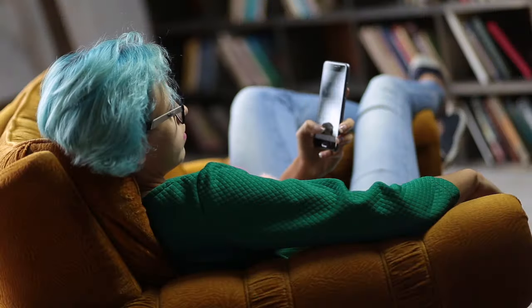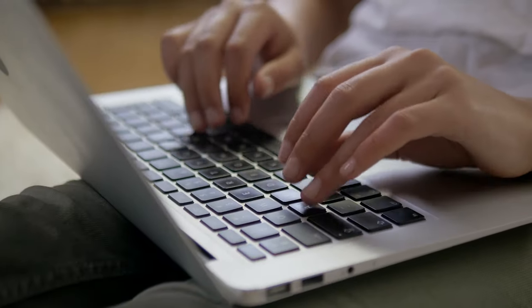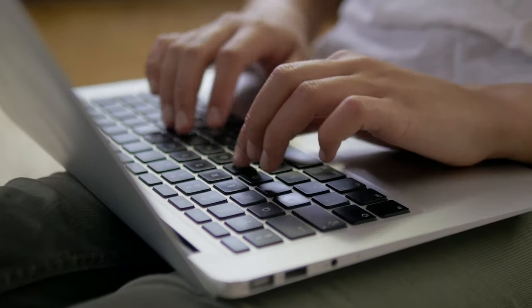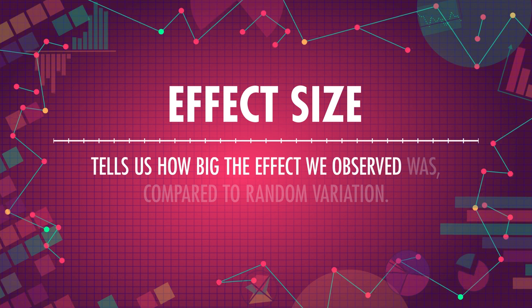Sometimes statistical significance doesn't give us the whole picture. You probably already use this kind of reasoning in your real life — like when you're scrolling through Instagram and see a former Bachelor contestant promoting a hair vitamin. A little googling tells you that yes, this vitamin does cause a statistically significant increase in hair growth, but only a few nanometers. Your hair normally grows about 12.7 millimeters a month, plus or minus a millimeter. So this vitamin has what we call a small effect size. Effect size tells us how big the effect we observed was compared to random variation. It's really important to pair our p-values with effect sizes, because sometimes we can get statistically significant effects but effect sizes that are so small they don't really matter to us.